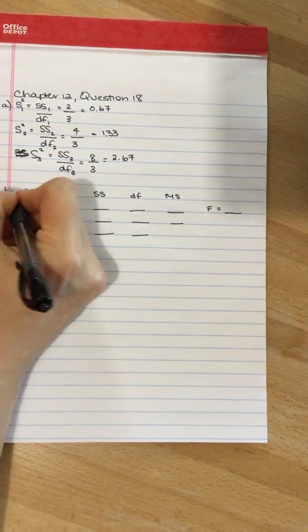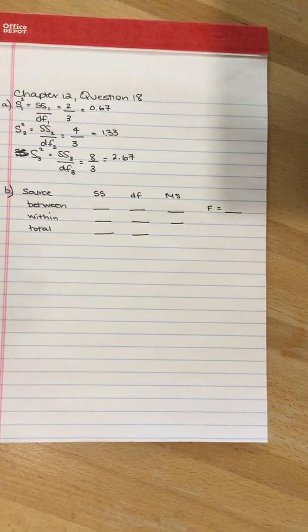So for part B, use an ANOVA with an alpha of 0.05 to determine whether there are any significant differences among the three treatment means.